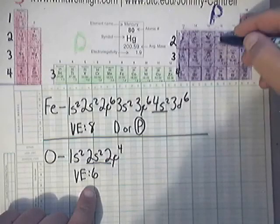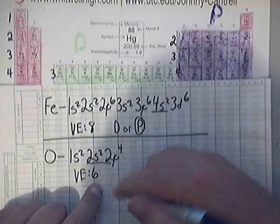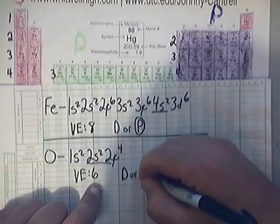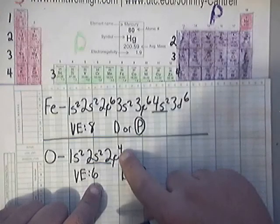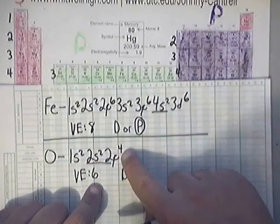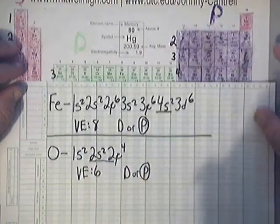So valence electron count is what? Well 2 plus 4 is 6. But if you pay close enough attention, oxygen is in column 16, so that's 6 valence electrons. Now as far as being paramagnetic or diamagnetic, well what do you think? Is that filled? No it's not, it's partially filled, so it's paramagnetic.